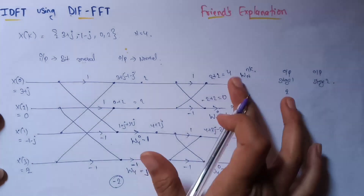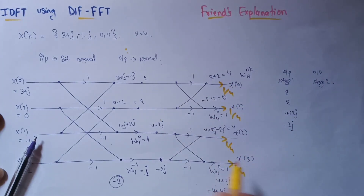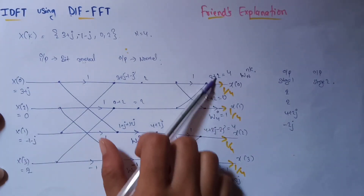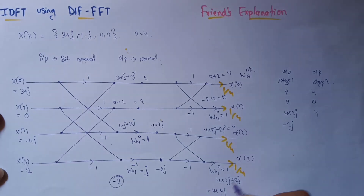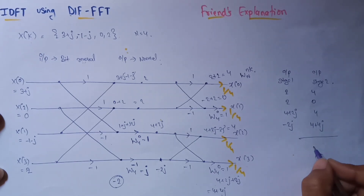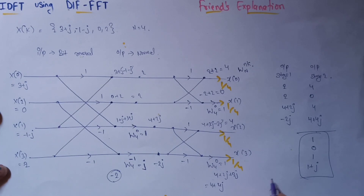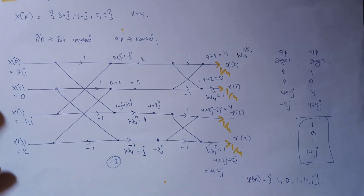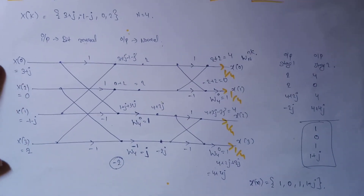In the final step we multiply every output by 1/4, because it is the inverse discrete Fourier transform. So we have: 4, 0, 4, and 4 plus 4j. Multiplying by 1/4 gives us: 1, 0, 1, and 1 plus j. This is the sequence in the time domain in normal index order. We can note the output as: 1, 0, 1, 1 plus j.